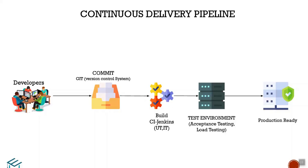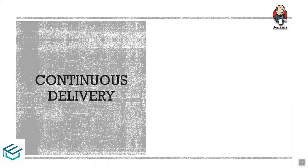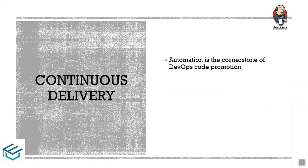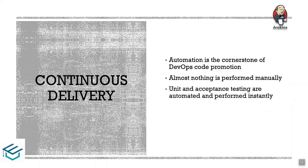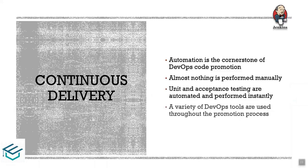One of the advantages of continuous delivery is automation in the DevOps code promotion process. Everything is automated and requires minimal manual intervention — no manual steps. Manual steps lead to errors, so automation helps overcome that in continuous delivery and deployment. This reduces manual errors, and unit testing gives instant feedback. Automation handles everything in continuous delivery.